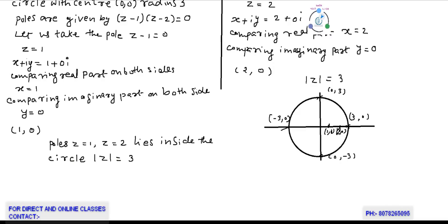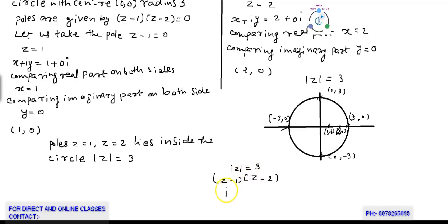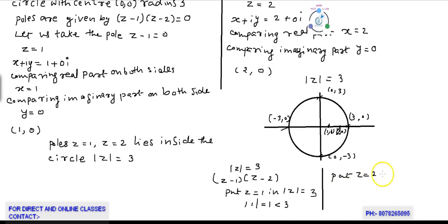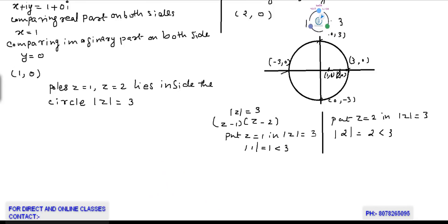There is an alternate method to check whether the poles z = 1 and z = 2 lie inside or outside the circle |z| = 3. Substituting z = 1: |1| = 1 < 3, so z = 1 lies inside. Substituting z = 2: |2| = 2 < 3. Therefore z = 1 and z = 2 both lie inside |z| = 3.